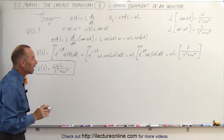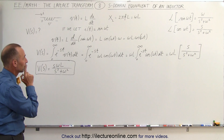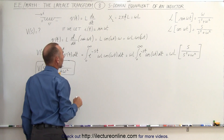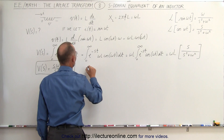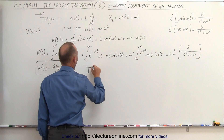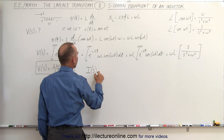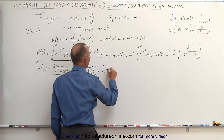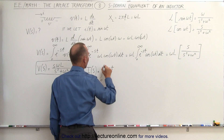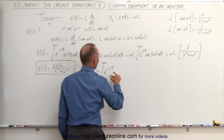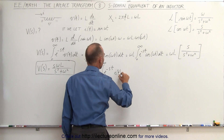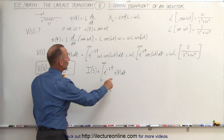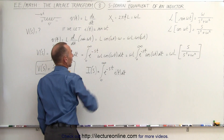Now we can do the same for the current. Since the current is written as that, we can say that the current I in the frequency domain is simply equal to the integral from zero to infinity of e^(−st) times I(t) dt. The current I(t) we already know — we said it was equal to sin(ωt).